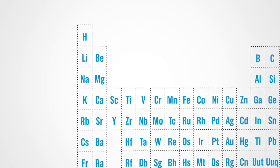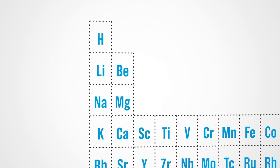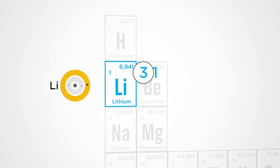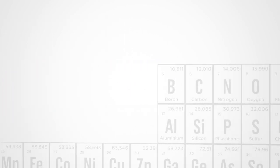We call it periodic because in this table, the elements become similar again periodically. Let's see. If we start at 3, lithium, the properties will vary regularly along the line, until 10, neon. Here, the last layer of electrons gets full.